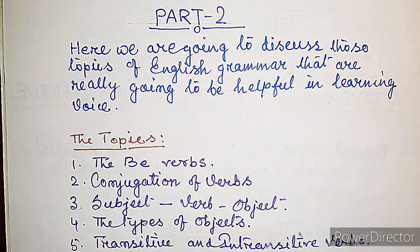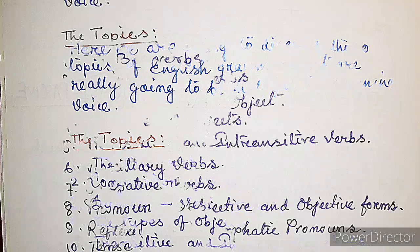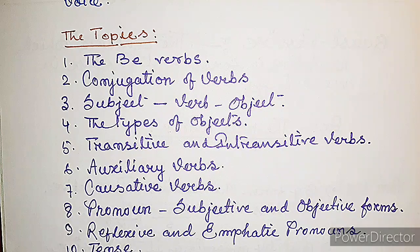So far that was part one. Now let's start part two of our study, where we will discuss those topics of English grammar that are really going to be helpful in learning voice. The topics are: number one, the be verbs; number two, conjugation of verbs — that means the three forms of the verbs; number three, identifying the subject, verb, and object in a sentence; number four, the types of objects.